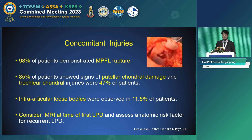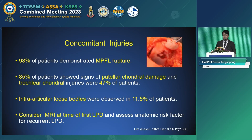Regarding concomitant injuries, 98% of patients demonstrate MPFL rupture on MRI, 85% show signs of patellar chondral damage, trochlear chondral injury occurs in 47% of patients, and intra-articular loose bodies are observed in 11.5% of patients. Therefore, consider MRI at the time of first lateral patella dislocation to assess anatomical risk factors for recurrence.